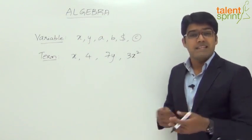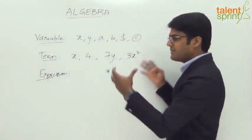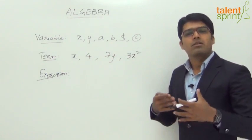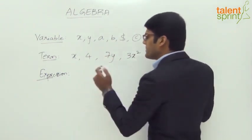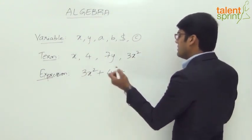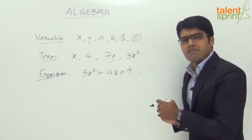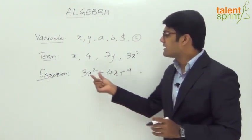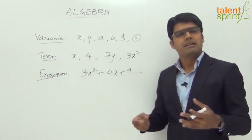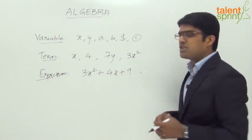Now coming to expression — what is an expression? An expression is a combination of terms using different mathematical operators like plus, minus, multiplication, or division. For example, a simple expression is as follows: 3x squared plus 4x plus 9. That is an expression — it is a collection of terms. There are 3 terms here: 3x squared is one term, 4x is the second term, and 9 is also a term. As I said, a term can simply be a number. So such a collection of terms is called an expression.